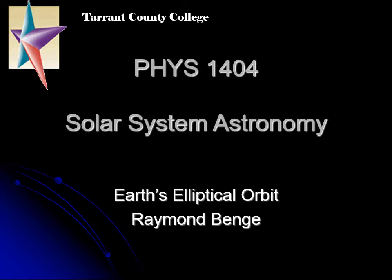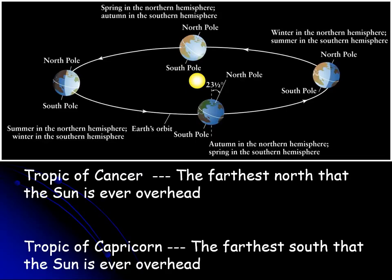We also know the Earth's orbit is elliptical. I often ask students: when are we actually closest to the sun? To answer that, we need to say a couple more things about elliptical orbits, because this relates to all kinds of orbits — not just the orbit of Earth around the sun, but also the orbits of the other planets around the sun, or the orbit of the moon around the Earth.